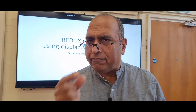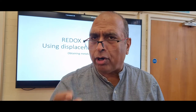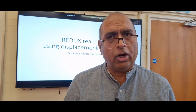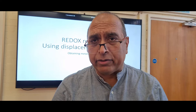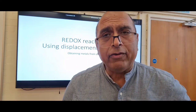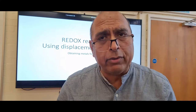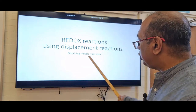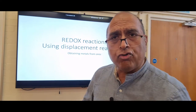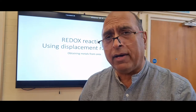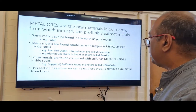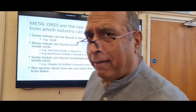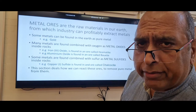Very few metals occur as the pure metal itself — you can still find gold nuggets in the Earth because gold is unreactive. The reactive metals have reacted away and are found as compounds. The question is how do we get metals out of the raw metal ores, and the answer involves displacement reactions. Two metals commonly asked about are iron and aluminium.